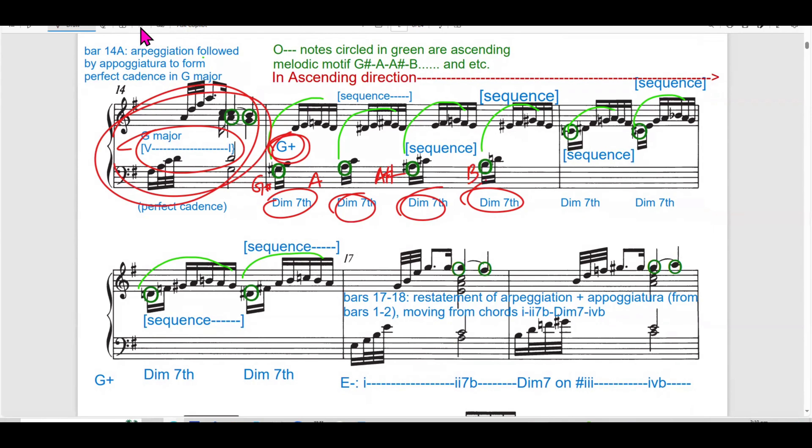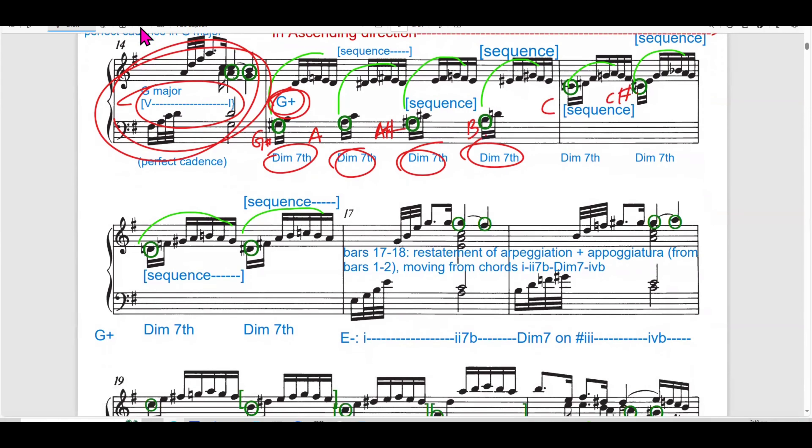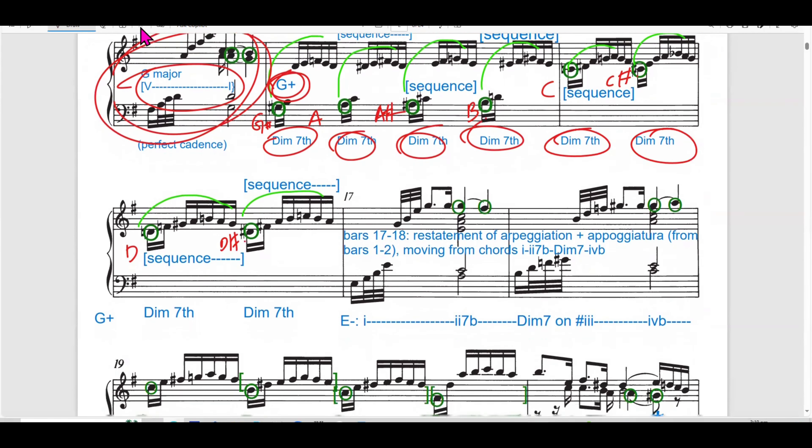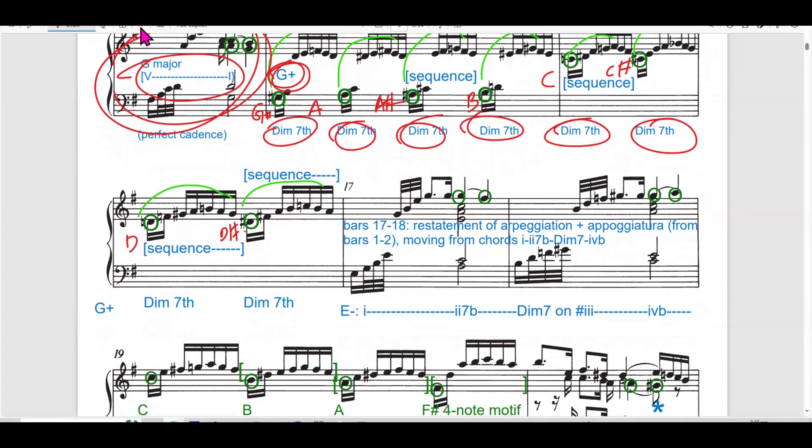In bar 15 to 16, it consists of series of ascending sequences in G major, where each sequence is built upon diminished 7 chords. So, this is the special thing in bar 15. The right-hand sequence creates a cascading effect, while left-hand outlines the harmonic framework with broken chords. The hidden melodic line in the starting note of each sequence forms an ascending chromatic line.